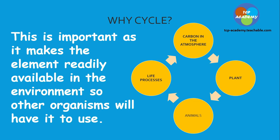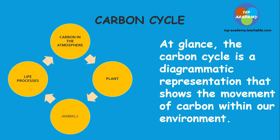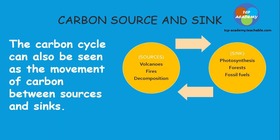The carbon cycle at a glance: the carbon cycle is a diagrammatic representation that shows the movement of carbon within our environment. The carbon cycle works through what we refer to as a source and a sink. The carbon cycle can be seen as a movement of carbon between these two areas — the source, which is places where you can get carbon from, and the sink, which is places where it's stored.